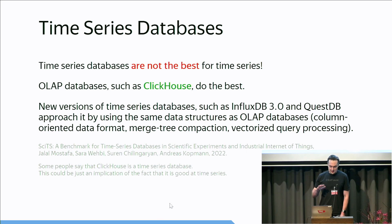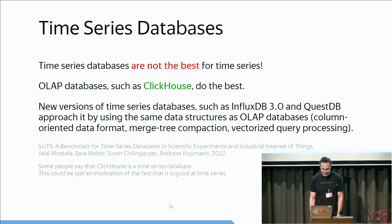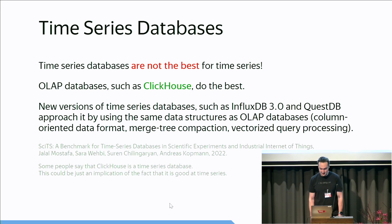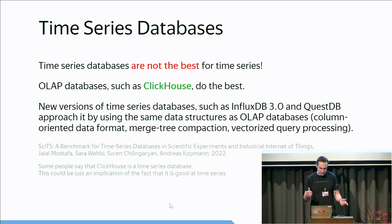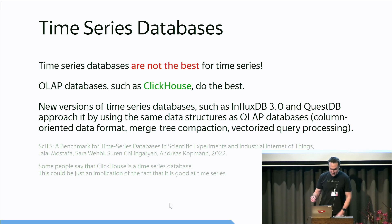An interesting observation: modern time series databases like InfluxDB 3.0 — they have three different versions, all used in production, and the latest version is not open source — but it is based on Apache Arrow, DataFusion, and merge-tree compaction. So it uses the same principles as analytical databases. The same for QuestDB — at least time series databases are converging to the same fundamentals.